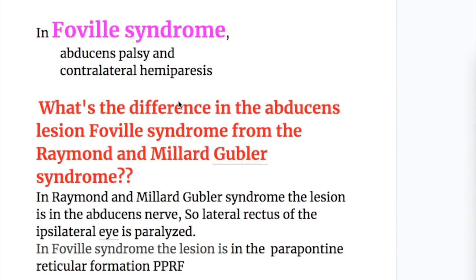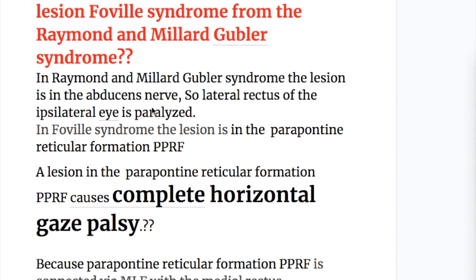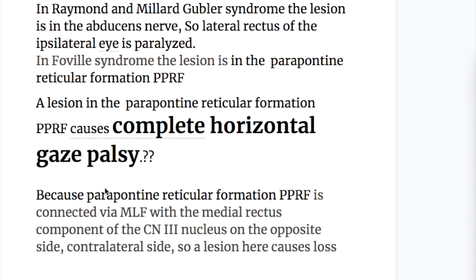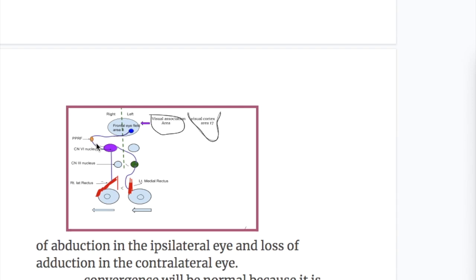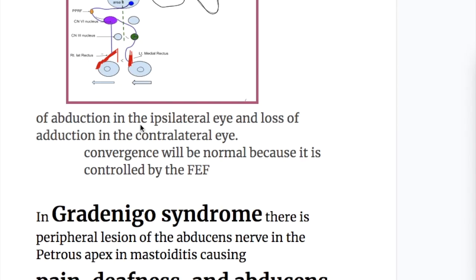In Foville syndrome, there is abducens palsy and contralateral hemiparesis. The difference from Raymond and Millard-Gubler syndrome is that in Raymond and Millard-Gubler syndrome the lesion is in the abducens nerve or its fascicle, so the lateral rectus muscle of the ipsilateral eye is paralyzed. In Foville syndrome, the lesion is in the parapontine reticular formation. A lesion there causes complete horizontal gaze palsy, because it controls the abducens nucleus, which supplies the lateral rectus ipsilaterally and the medial rectus component of the oculomotor nucleus on the opposite side via the medial longitudinal fasciculus. This causes loss of abduction in the ipsilateral eye and loss of adduction in the contralateral eye. Convergence remains normal because it is controlled by the frontal eye field.